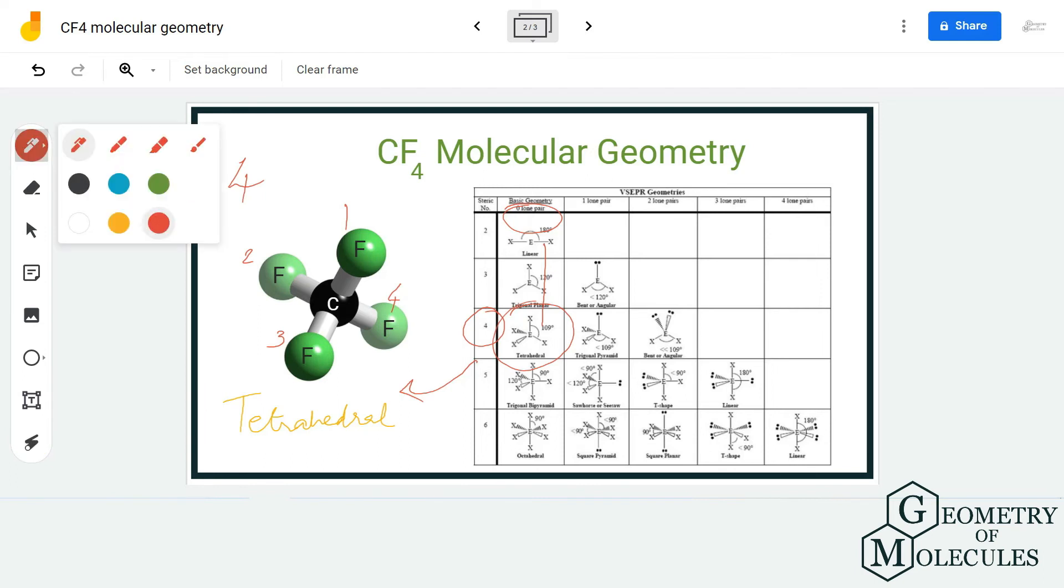This confirms our assumption that the CF4 molecule is tetrahedral. You can also check out the AXN notation method. To determine the AXN notation, the formula is AXN, where X is the number of atoms forming bonds with the central atom and N is the number of lone pairs.